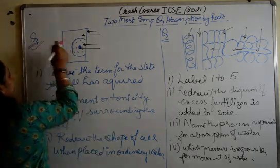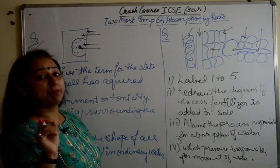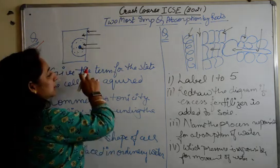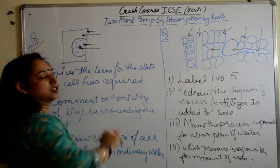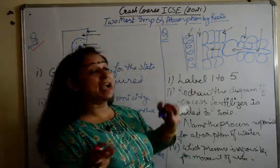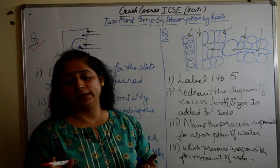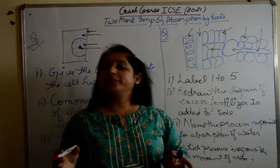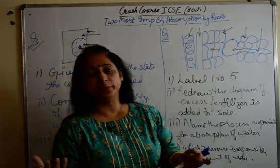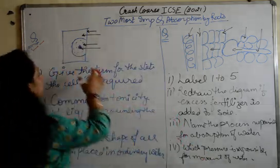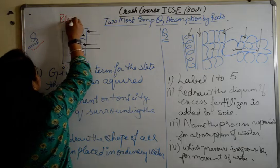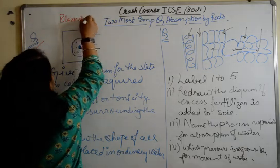The first question is one in which plasmolysis is visible. Whenever you get a structural question, see the diagram carefully and then think about what you interpret from the diagram. Like for example, see this diagram — the first thing that should come to mind is plasmolysis.